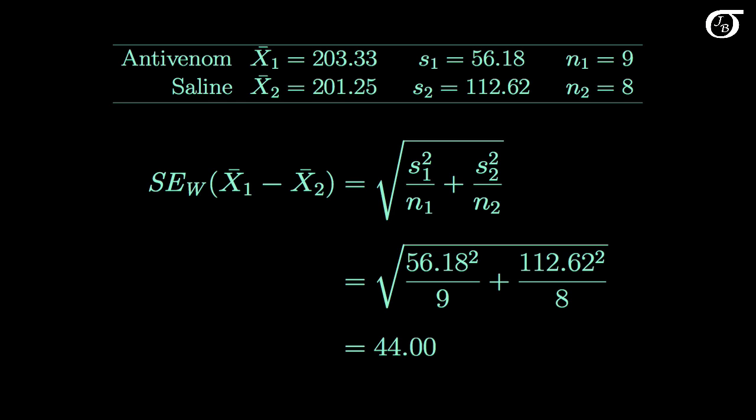The Welch procedures do not assume equal population variances, so the fact that the sample standard deviation of one group is about double the sample standard deviation of the other is not a big deal.